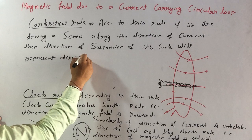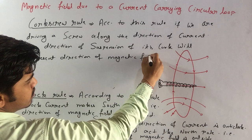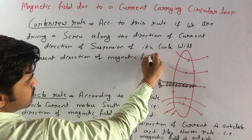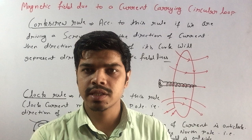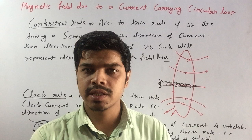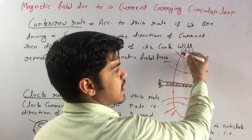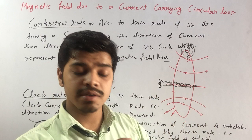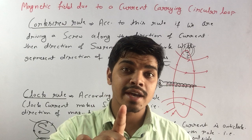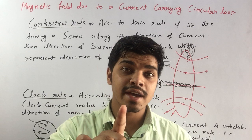So students, the magnetic field of a current carrying straight wire runs in concentric circles around it. Similarly, inside a current carrying circular loop, concentric circles of magnetic field are formed. Thank you for watching.